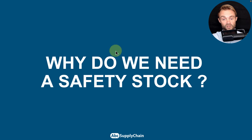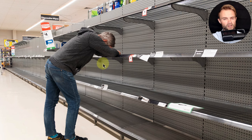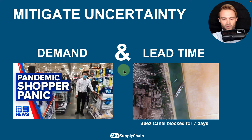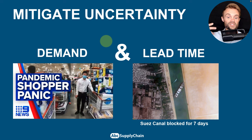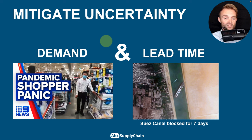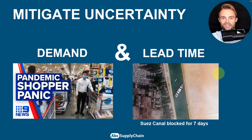We need safety stock to prevent shortages and out-of-stock situations. Safety stock mitigates two kinds of uncertainty: demand uncertainty and lead time uncertainty. If your forecast accuracy were 100% and you knew exactly the lead time from your suppliers, you would not need any safety stock — but that's not the world we live in, so we'll cover both uncertainty levels.